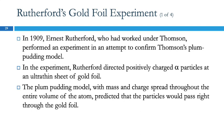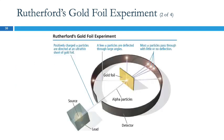Rutherford was working with Thompson and set out to test the model — he was trying to confirm it. What he did was take these positively charged alpha particles and shoot them at a very thin piece of gold foil. So he's got a source of alpha particles shooting a beam at this really thin piece of gold foil. If this is like a blueberry muffin and you're shooting these little tiny things at it, we expect the particles are just going to go straight through. And most of them did — but some of them bounced back.